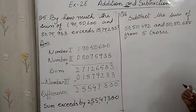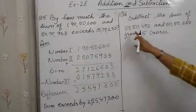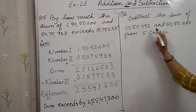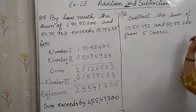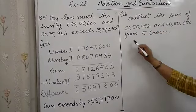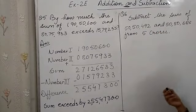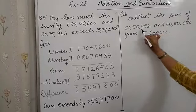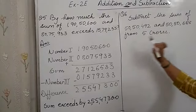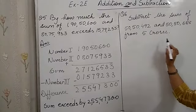Next question. Subtract the sum of 50,50,492 and 50,50,688 from 5 crores. Again we will read it in a different way. Subtract the sum of number 1 and number 2 from number 3. Very easy.